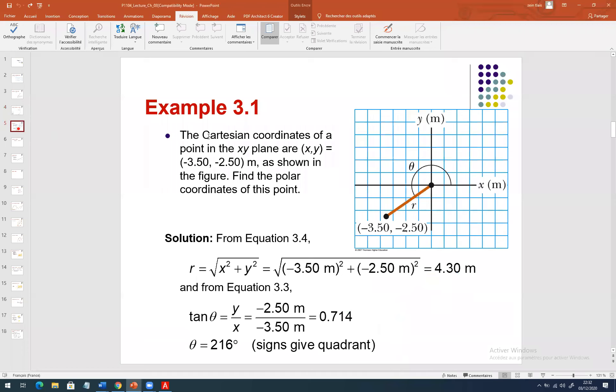Now, I give you a simple example. If you have the Cartesian coordinates of a point A, x equals minus 3.5, y equals minus 2.5. In this region, x and y are negative. They have negative values. So, I ask you to find the polar coordinates.